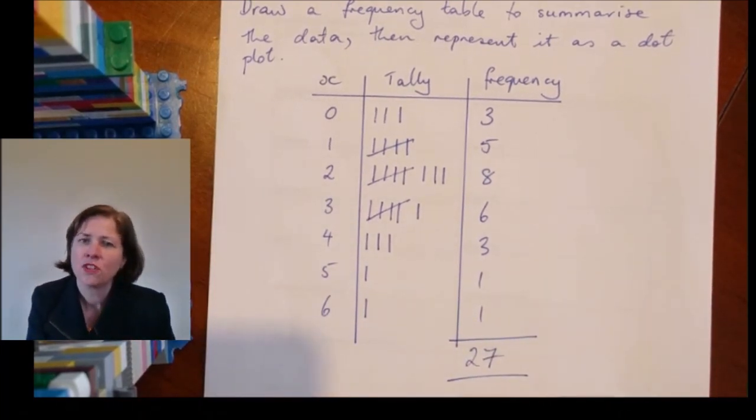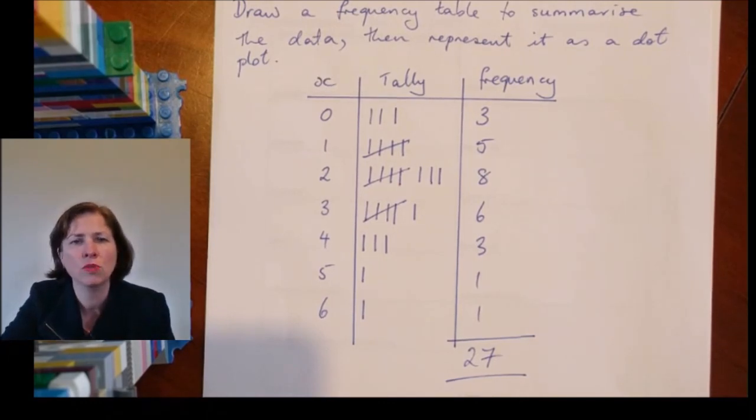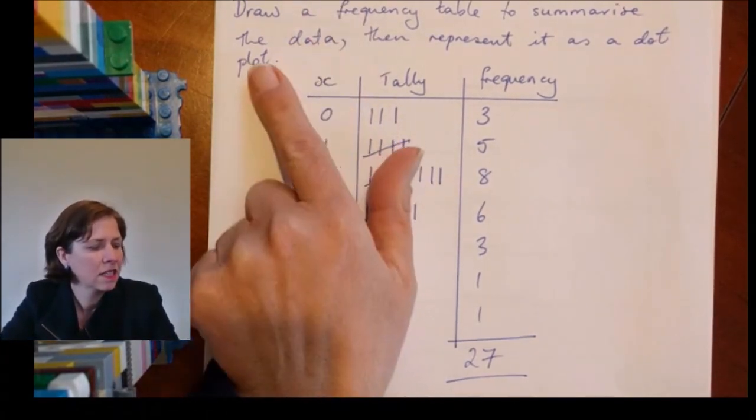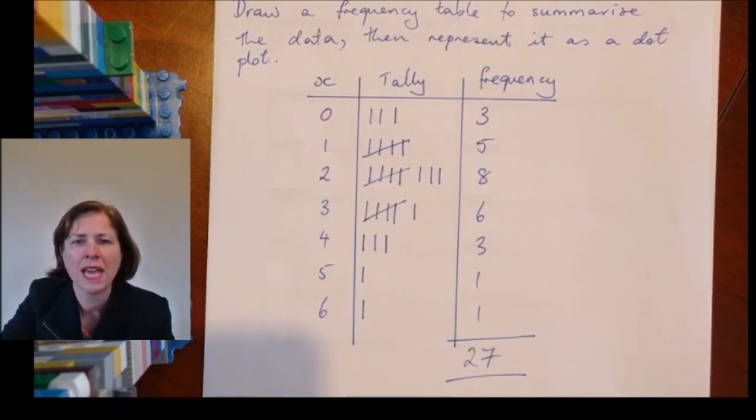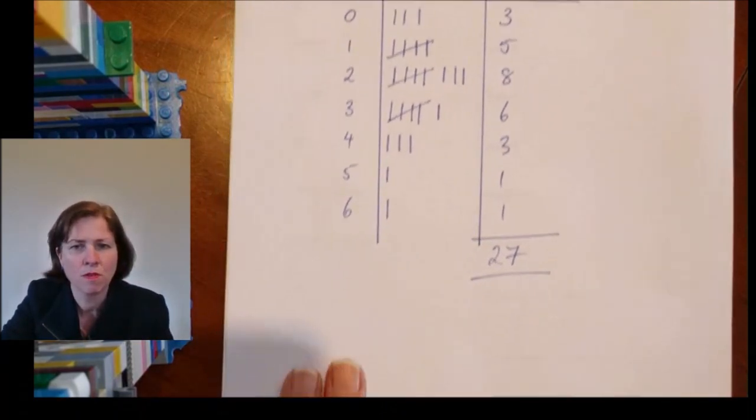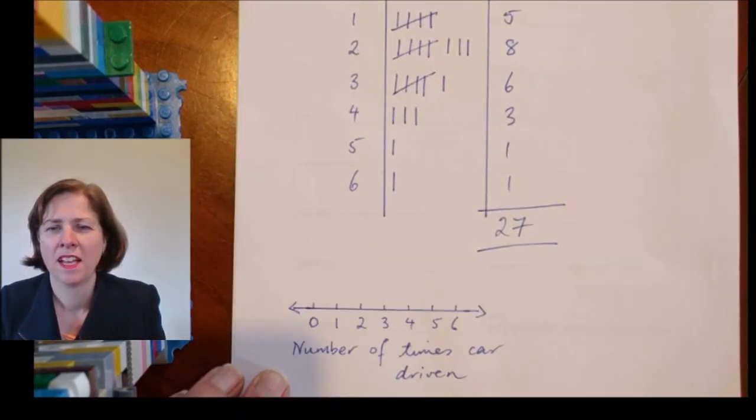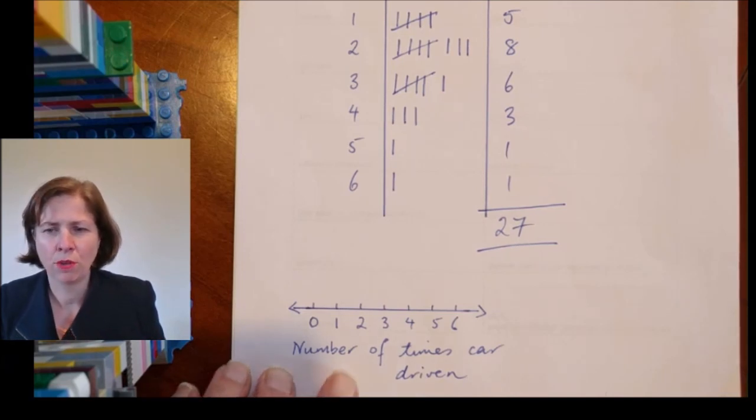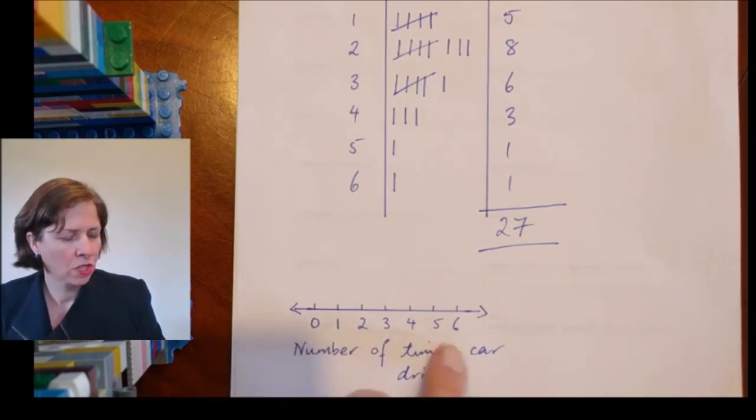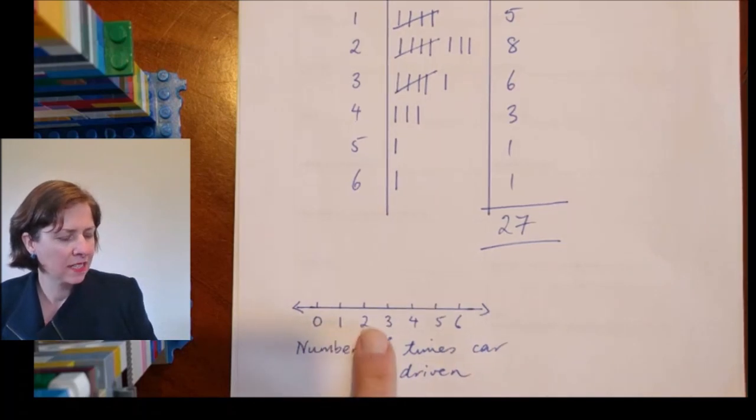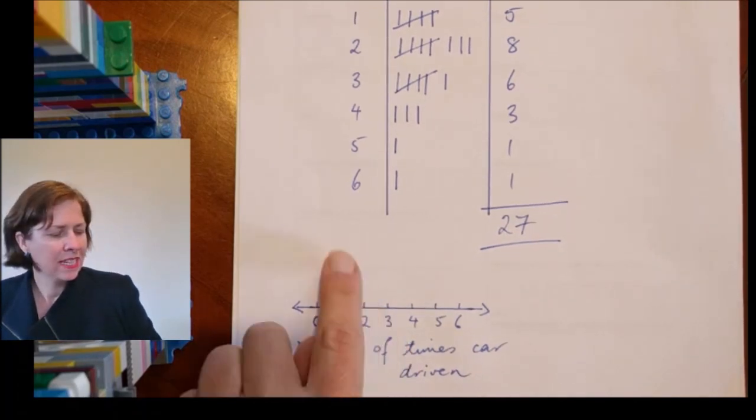So that's my frequency table. The next thing I need to do is the dot plot. I'm going to make a dot plot down the bottom of the page. So I've prepared my dot plot number line here—I've just drawn a little number line and I've put all my categories underneath.